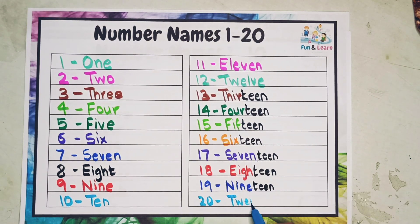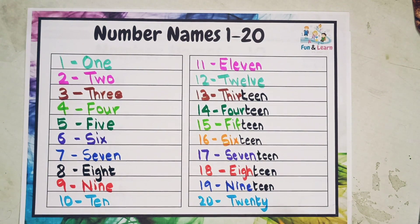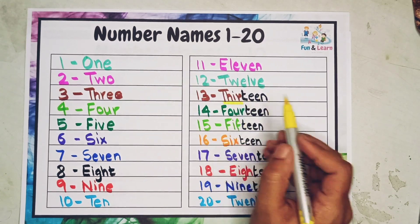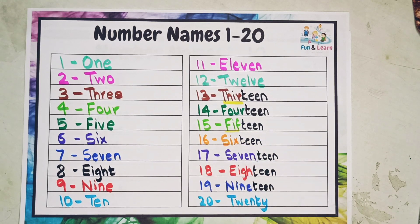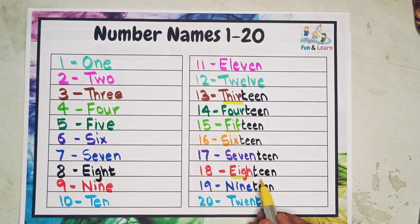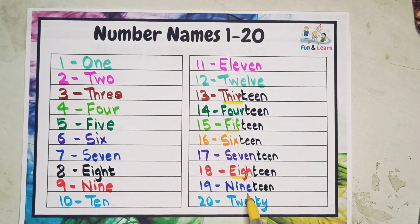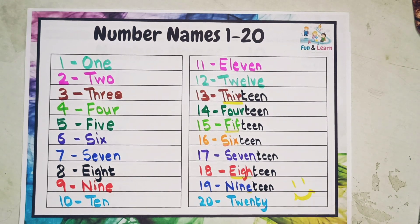Now, what you have to remember is that it's thirteen, not thirdteen. It's fifteen, not fiveteen. It's eighteen, not eighteent. And the spelling of nineteen has an E—it's N-I-N-E-T-E-E-N. So practice it at least twice. Thank you for watching.